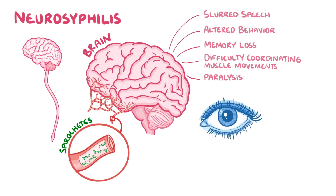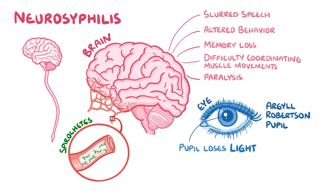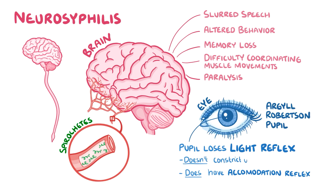Syphilis can even affect the eye, causing Argyll Robertson pupil, which is when the pupil loses its light reflex but still has its accommodation reflex, meaning the pupil constricts when there's a nearby object — it just doesn't respond when exposed to light.